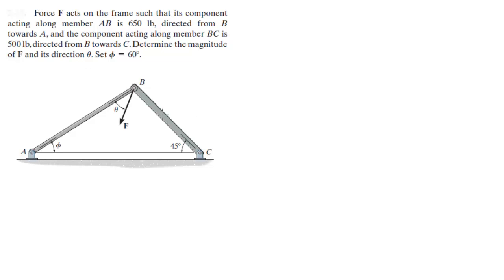Force F acts on the frame such that its component acting along member AB is 650 pounds, directed from B to A, and the component acting along member BC is 500 pounds, directed from B towards C. Determine the magnitude of F and its direction theta, with this angle set to 60 degrees.